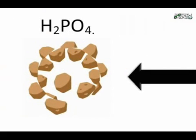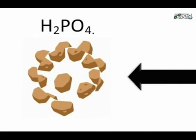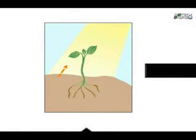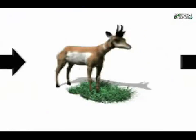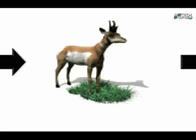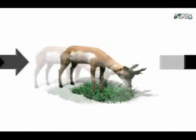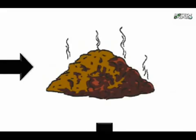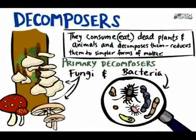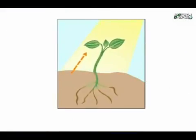The main sources of phosphorus are found in the Earth's crust. With weathering, rocks release phosphorus in the form of phosphate, or H2PO4. The phosphorus enters the soil where plants take it up through the roots. When animals eat plants, they take up phosphorus, and when the plant or animal dies or releases waste, phosphorus becomes available to decomposers such as fungi and bacteria, which break down tissues and release the phosphate back into the environment.